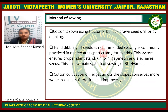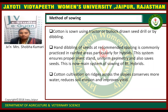Method of sowing. Cotton is sown using tractor-drawn seed drill or dibbling. Dibbling of seed at recommended spacing is commonly practiced in the rainfed area, particularly for the hybrids. This system ensures proper plant stand, uniform geometry, and also saves seeds. This is now the main system of sowing for Bt hybrids. Cotton cultivation on ridges across the slopes conserves more water, reduces soil erosion, and improves yield.